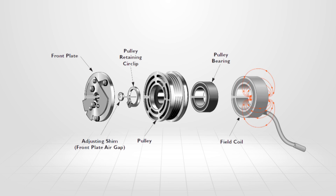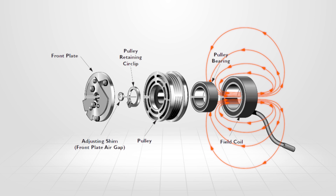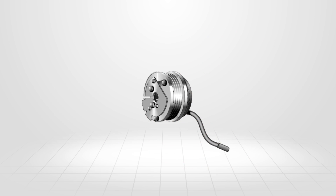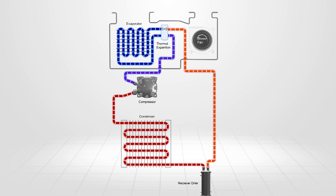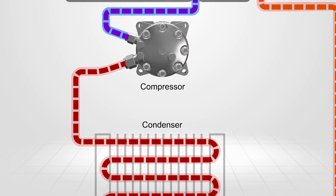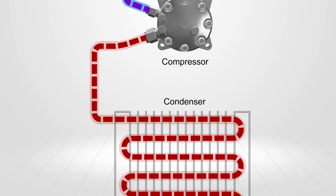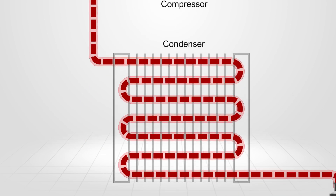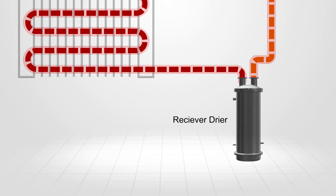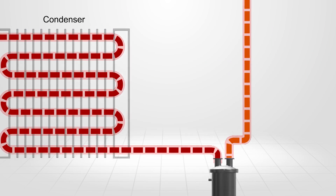The clutch is designed to engage the pulley to the compressor shaft when the clutch coil is energized. The role of the clutch is to transmit power from the engine to the compressor and to provide a means of engaging and disengaging the refrigeration system from engine operation.